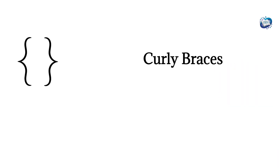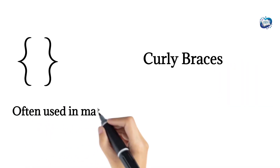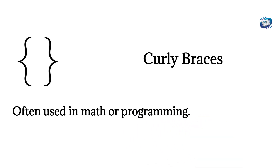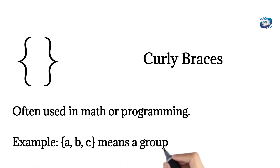Curly braces. Often used in math or programming. Example: {A, B, C} means a group of items.